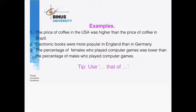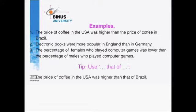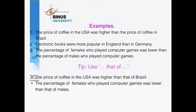Here's a little tip: a good idea is to use 'that of' to make your sentences more concise. If you look at examples one and three, there's quite a lot of repetition. So one thing you can do is use 'that of' to make your sentence more effective. For example: 'The price of coffee in the USA was higher than that of Brazil.' Or: 'The percentage of females who played computer games was lower than that of males.' 'That of' is a relative pronoun that replaces the repeated part of the variable.